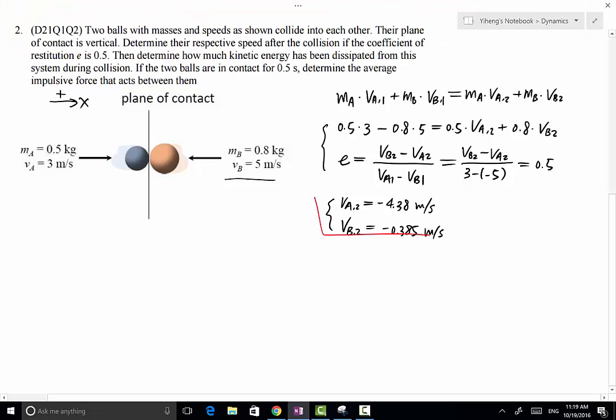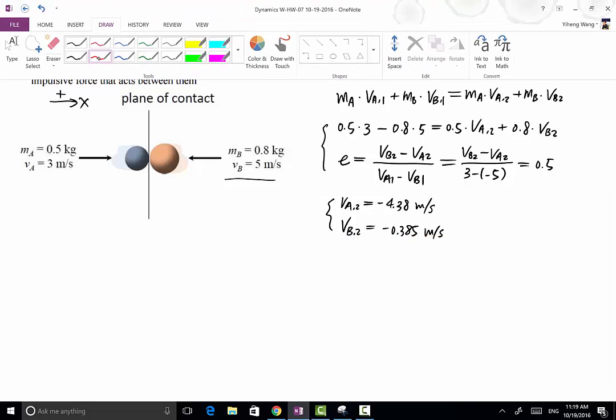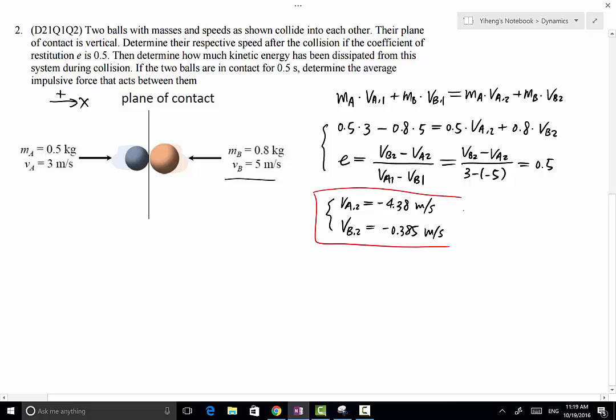That answers the first part of the problem. Both velocities are negative, meaning they both move to the left. Because ball B has a bigger mass and bigger initial velocity than ball A, after the collision they both continue to travel to the left.